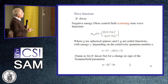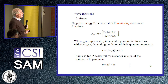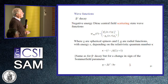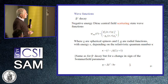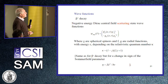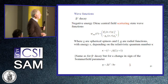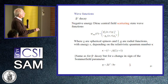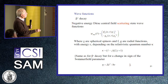For all of these problems we need the wave functions. For beta-plus decay, we still need scattering-state wave functions, which are now the negative-energy Dirac central-field wave functions. The upper and lower components are exchanged. Again, chi are spherical spinors and f and g are the radial functions with energy epsilon, depending on the relativistic quantum number kappa. This is the same as beta-minus decay but for a change in sign of the Sommerfeld parameter, which is Z squared over h-bar v.